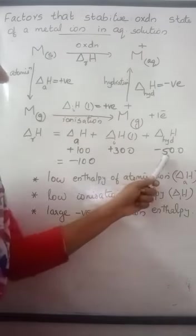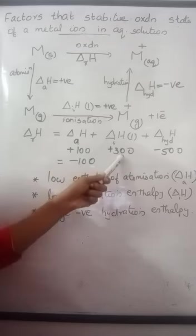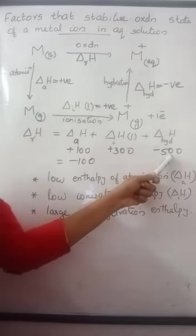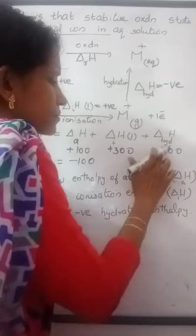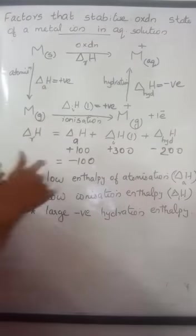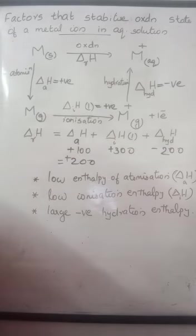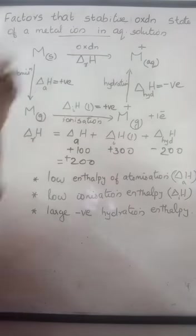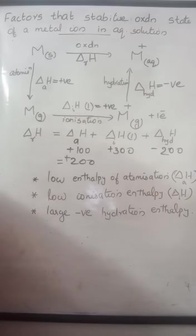It is stabilized due to the large negative hydration enthalpy. So even though the atomization and ionization enthalpies are not favorable and their values are higher, the oxidation state will still be stable if the hydration enthalpy is sufficiently large and negative. But if the hydration enthalpy is small, like -200, the net enthalpy becomes 400 minus 200, which is +200. That means 200 units of energy must be supplied, the reaction is not feasible, and the stability of this particular oxidation state is very, very less.